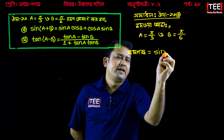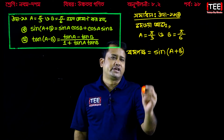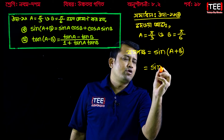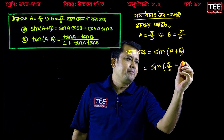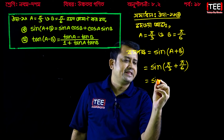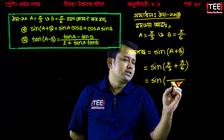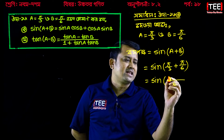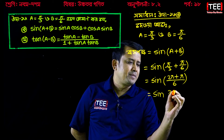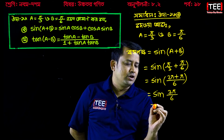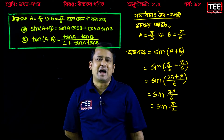1 is equal to a plus b. So a plus b: a is pi by 3 and b is pi by 6. We have 2pi plus pi over 6, which gives us 3pi by 6. That equals sin(pi by 2). We have two times sin(pi by 2).